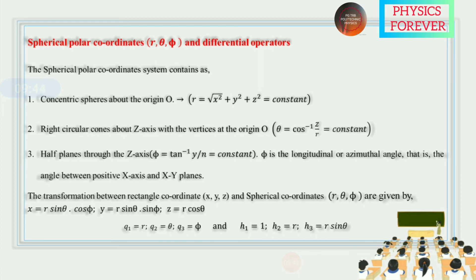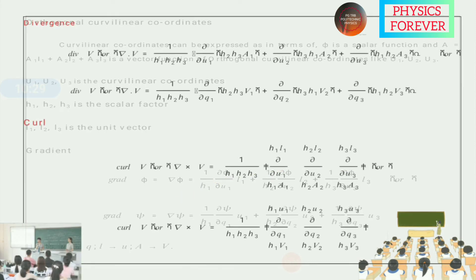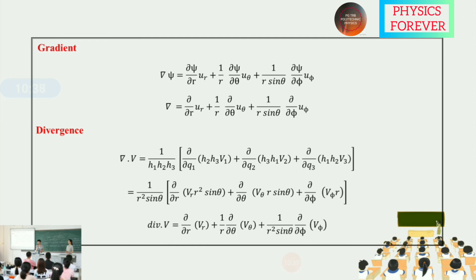In this equation, x, y, z are rectangular coordinates and r, theta, phi are spherical coordinates. From the general orthogonal curvilinear expression, we take q1, q2, q3 as r, theta, phi and h1, h2, h3 as 1, r, and r·sin(theta) respectively. Applying these values — h1=1, h2=r, h3=r·sin(theta); q1=r, q2=theta, q3=phi — we get the gradient and divergence in spherical polar coordinates. Similarly for curl.